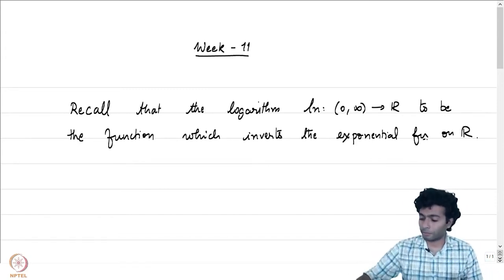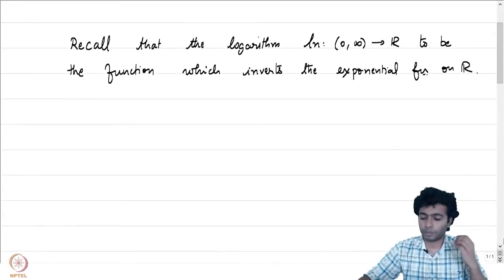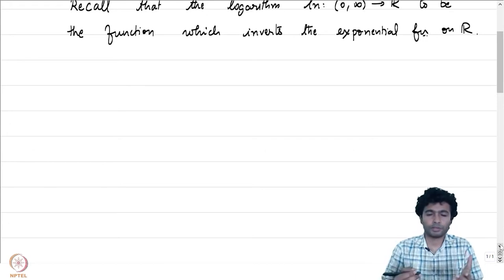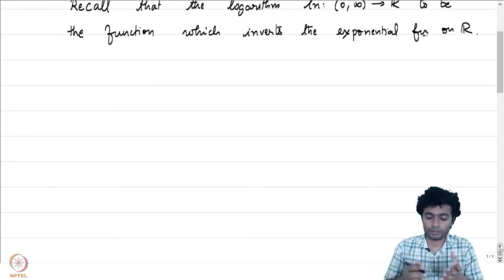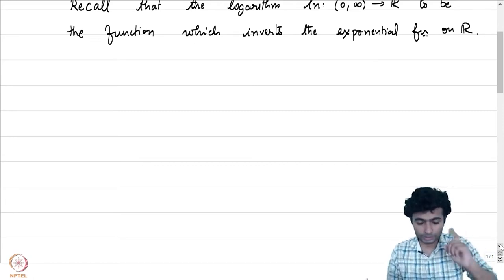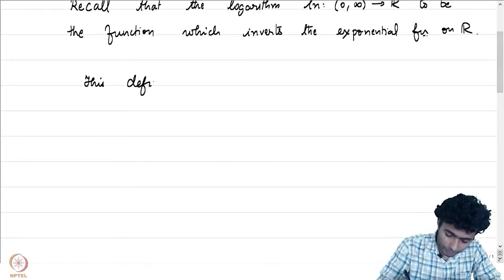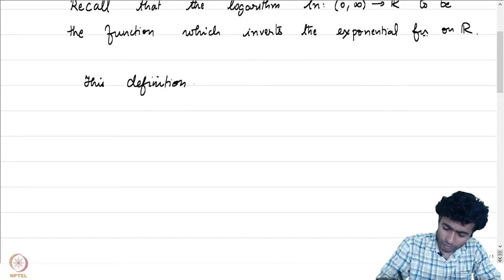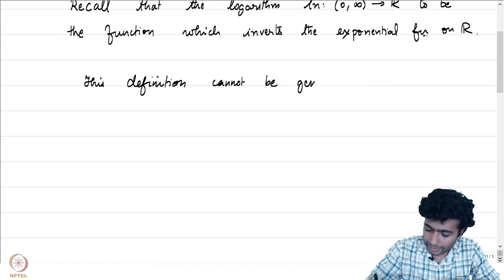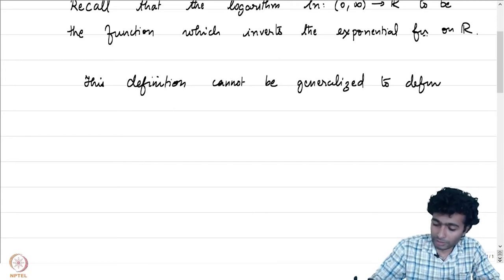If we try to define the complex logarithm analogously, we are going to hit a roadblock immediately, because the first observation is that the exponential function, which is a map from ℂ to ℂ* (that is, ℂ minus {0}), even though it is an entire function, it is not an injective function. So this definition cannot be generalized to define the complex logarithm.